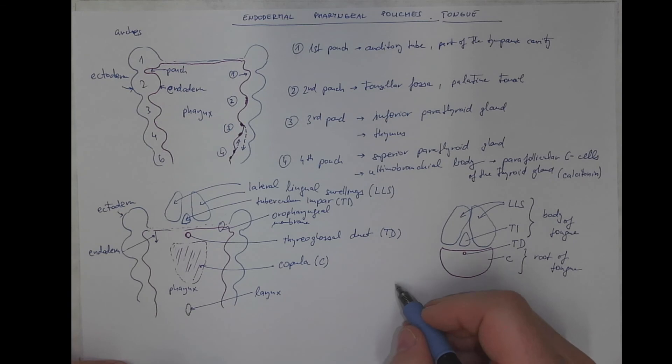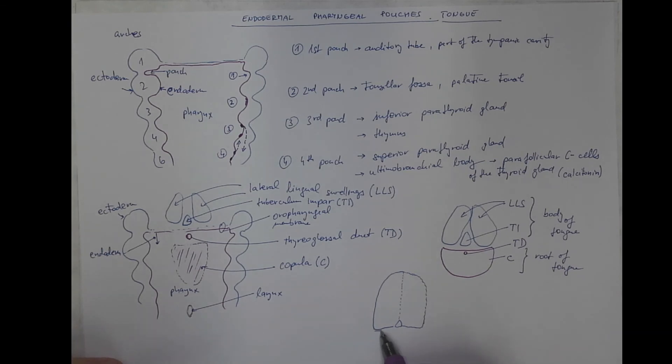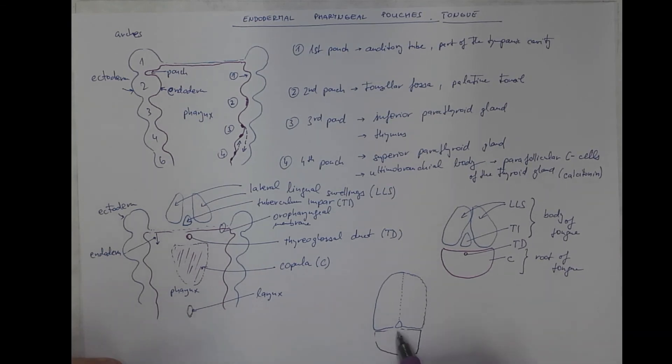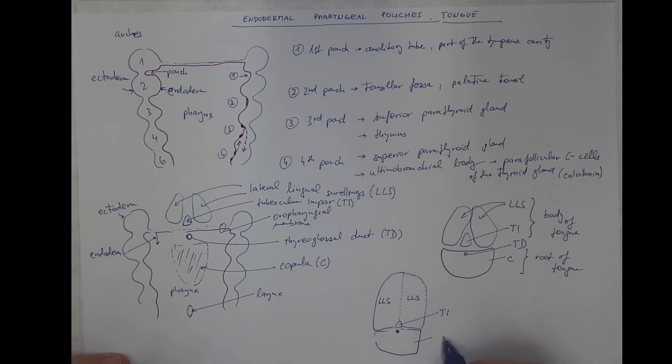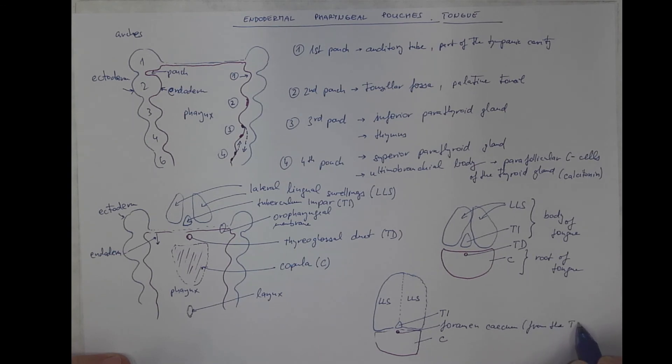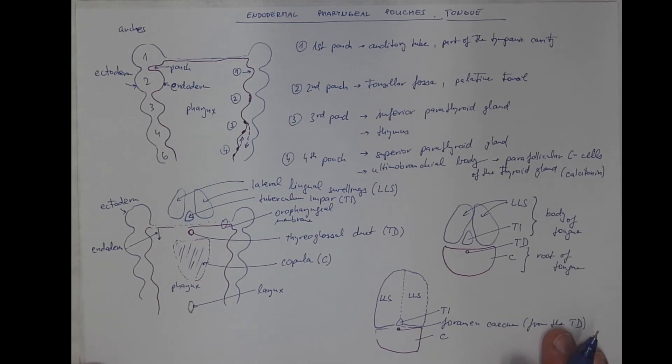So, the final form will be approximately this. There will be a raphe here. The tuberculum impar, lateral lingual swellings, and the copula here forms the radix with the foramen cecum as the remnants of the thyroglossal duct. And here as the foramen cecum, a blindly ending residual of the thyroglossal duct, as will be in detail explained in another scheme showing the development of the thyroid gland.